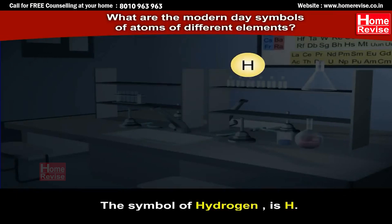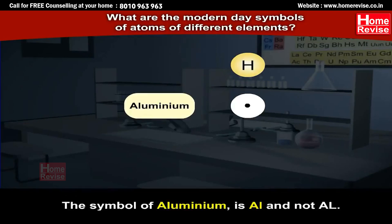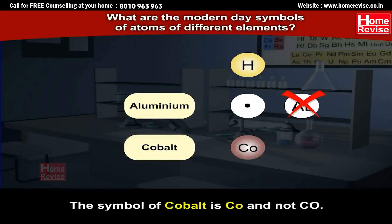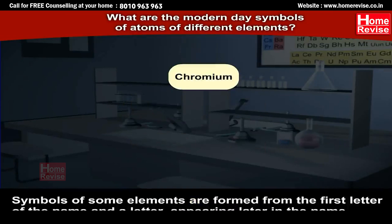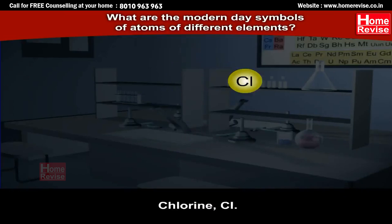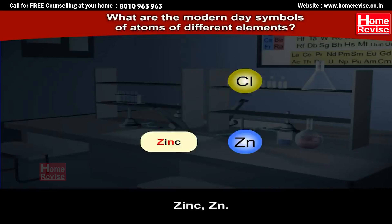For example, the symbol of hydrogen is capital H. The symbol of aluminum is capital A and small L — not capital A and capital L. The symbol of cobalt is capital C and small O — not capital C and capital O. Symbols of some elements are formed from the first letter of the name and a letter appearing later in the name; for example, chlorine is Cl and zinc is Zn.